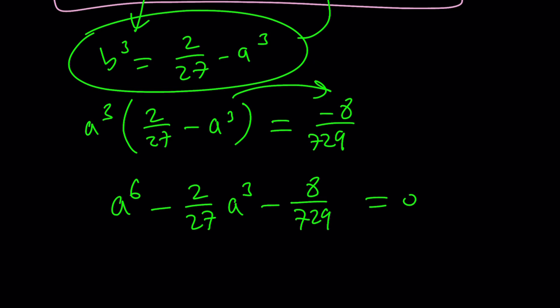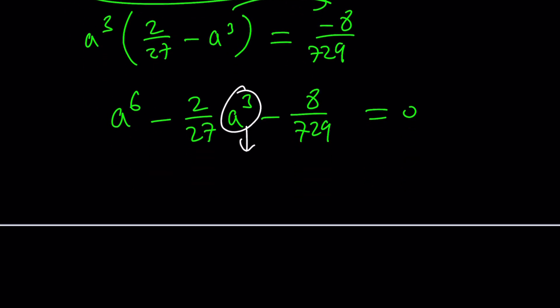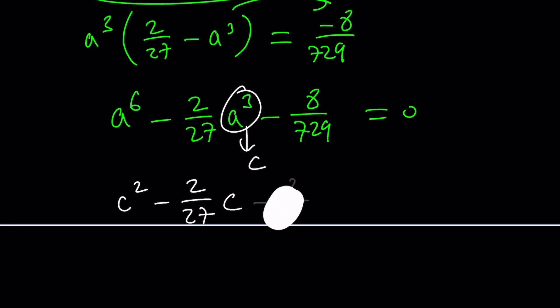Why is this quadratic? Because if you change the variable and set a cubed equal to c, you get something like c squared minus 2 over 27 times c, and then we get a quadratic equation. To keep a long story short, we can solve it with the quadratic formula.